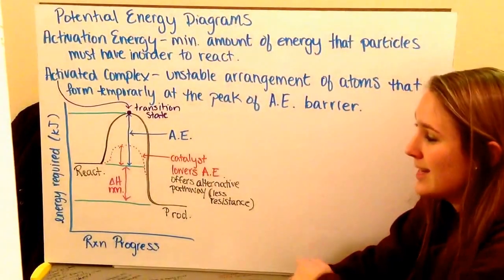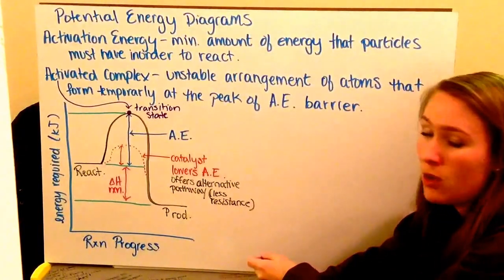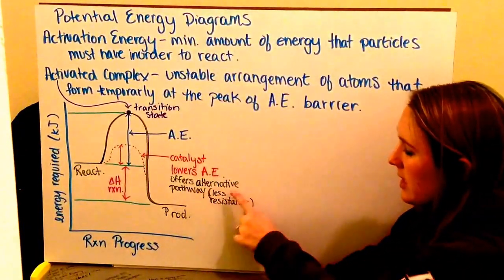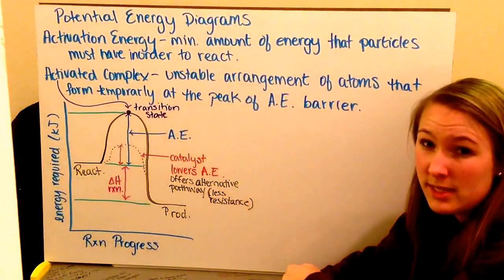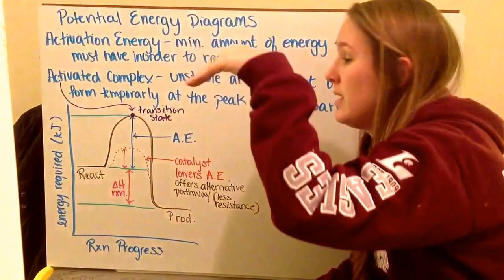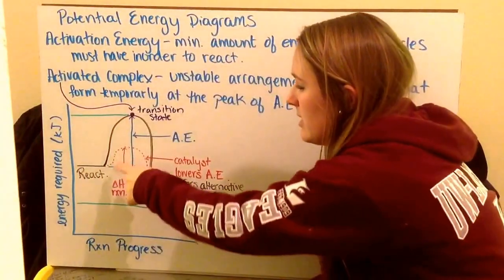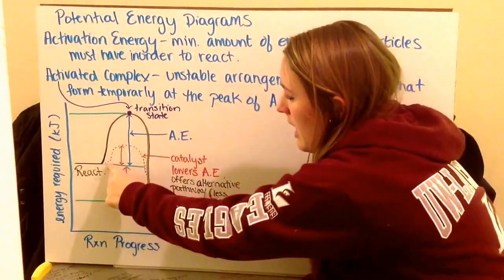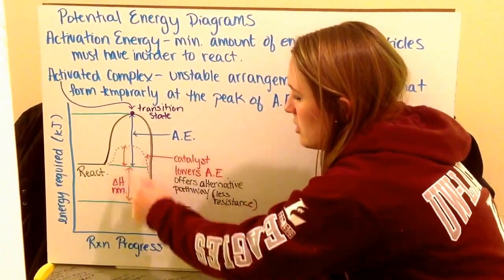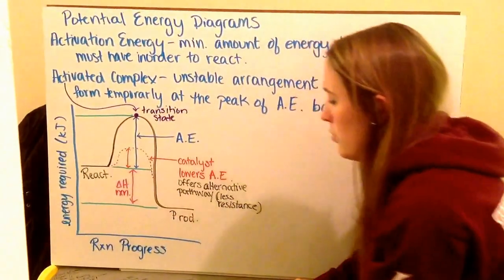So the difference between your reactants and where the transition state is, this is your activation energy from the peak of your transition state from your reactants. You can introduce a catalyst. This is going to lower your activation energy. It offers an alternative pathway that has less resistance. So it would be moving quicker up the hill and pushing down, and it still is able to get over this hump easier. I drew it in a dotted red line. Notice that here we have a smaller activation energy to allow my reaction to progress.